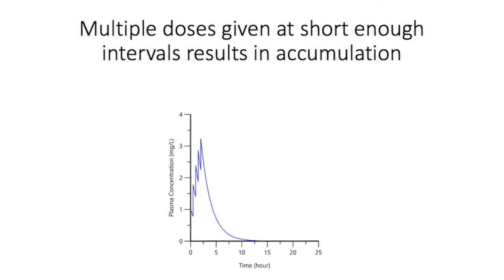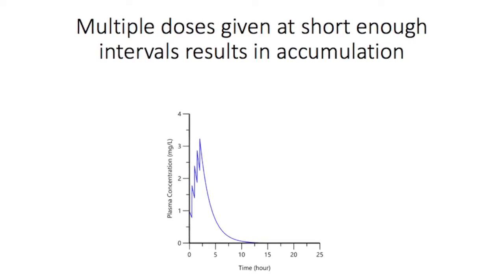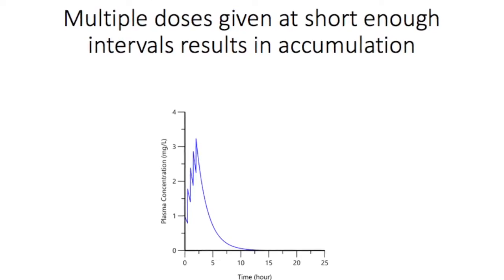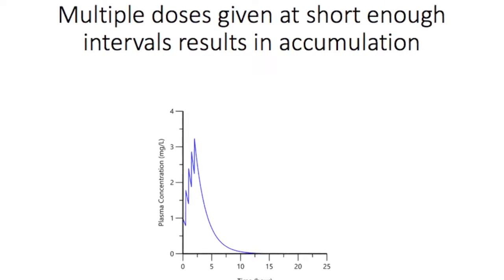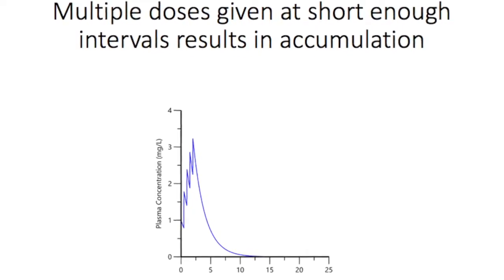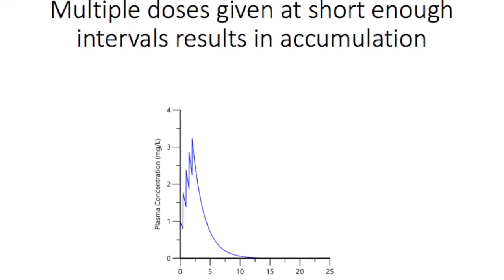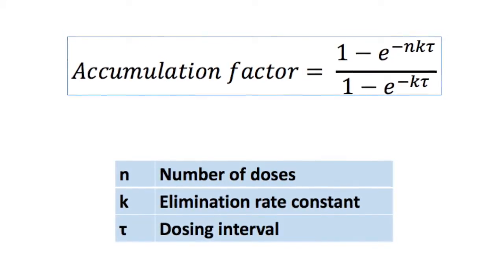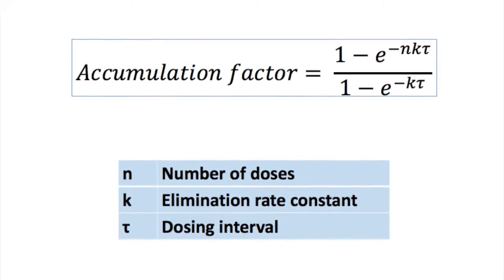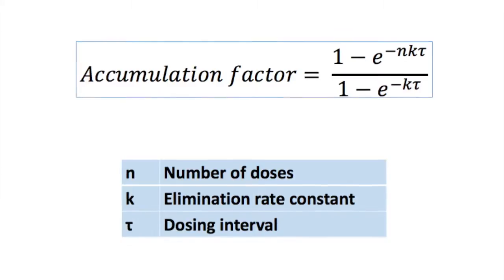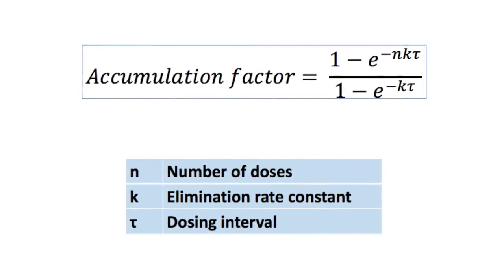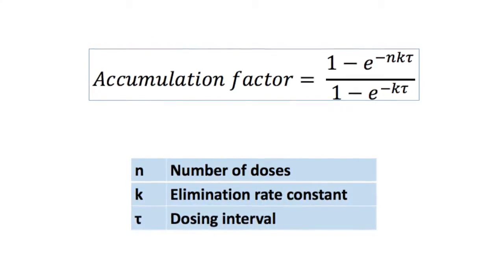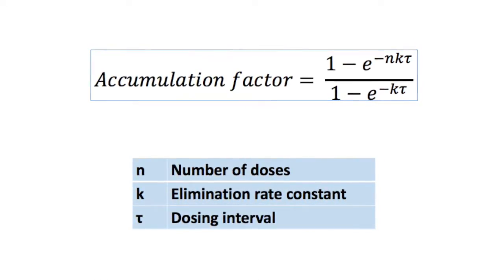As we see in this slide, because the next dose is given while there is still a sizable portion of the previous dose in the body, the drug concentration starts to accumulate to concentrations higher than after the first dose. The actual level of accumulation can be calculated using this formula, the derivation of which was shown in the chapter of your textbook assigned for this week's reading. Notice the variables in this equation are number of doses (n), the elimination rate constant (k), and the dosing interval (τ).